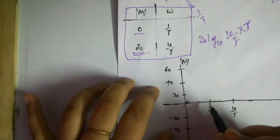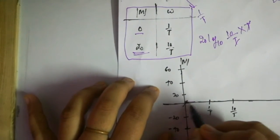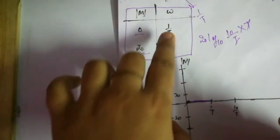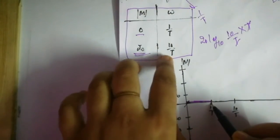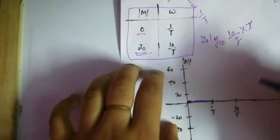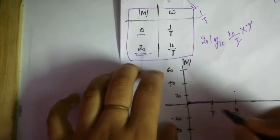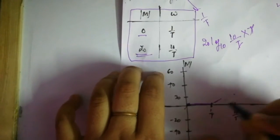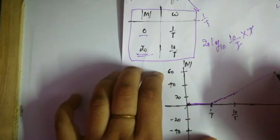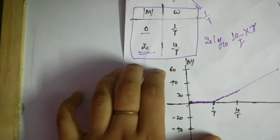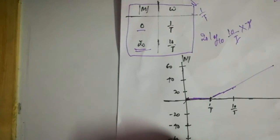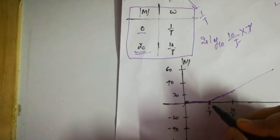Now let's plot the Bode plot. We plot the graph: at ω = 1/T, the magnitude is 0 dB. After that, at ω = 10/T, the magnitude is +20 dB. We get these two points and join them. Simple — no problem.